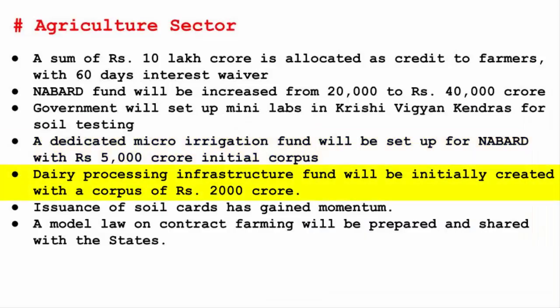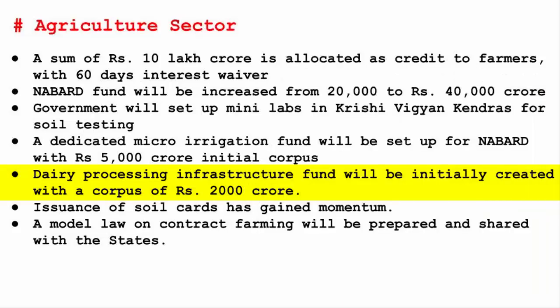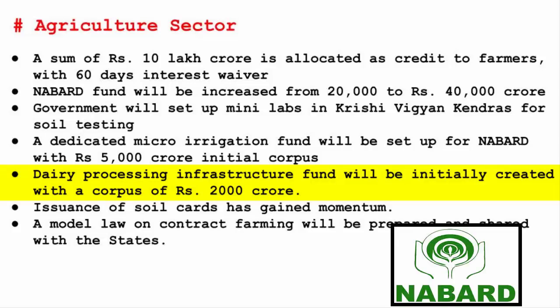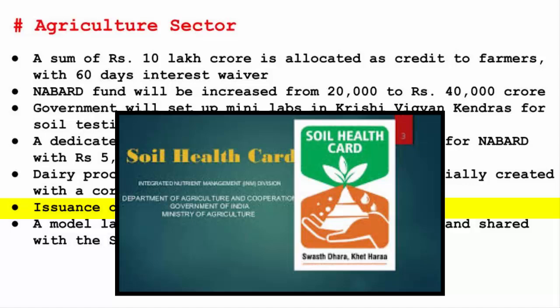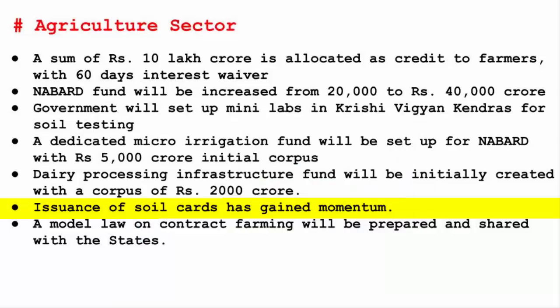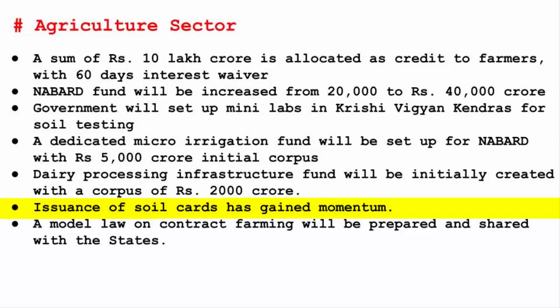A Dairy Processing Infrastructure Fund will initially be created with a corpus of Rs. 2,000 crore. The existing infrastructure of the dairy sector has become old and obsolete. Since the dairy cooperative sector lacks funds to invest, the government will create this fund, associated with NABARD, to help the rural economy with employment since many dairy sector workers come from rural backgrounds. Soil health cards, which contain details about what kind of soil a farmer has, what they can grow, and what measures they can take to improve, are issued once every three years and have gained good momentum.